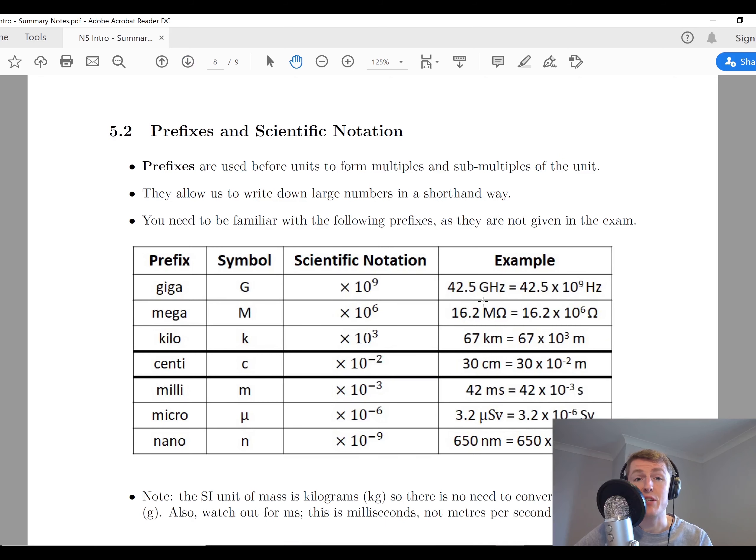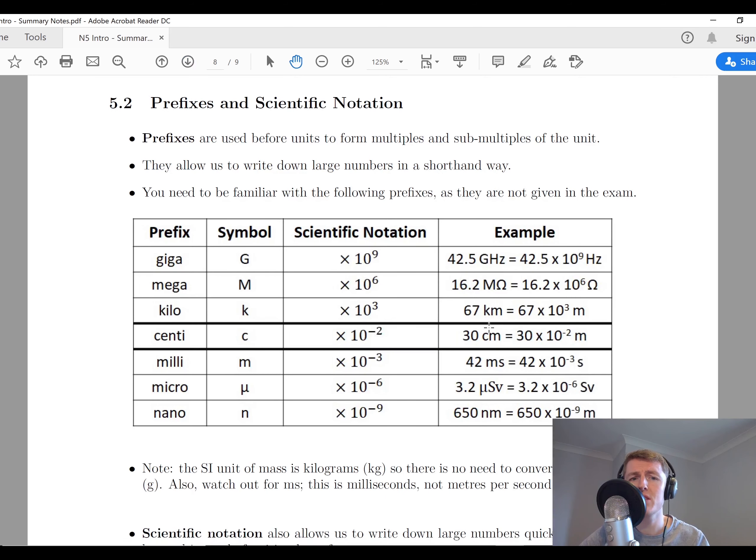The next thing to look at then is prefixes and scientific notation. Prefixes, as I said before, you will have used these before. Why these are used is because they form multiples and submultiples of a unit. They allow us to write down large numbers in a shorthand way. Instead of writing down really big numbers in a question, the examiners might give you loads of numbers but with prefixes in front of the unit. What you need to be able to do is convert from prefixes into numbers. You don't actually have to convert from numbers back into prefixes. All we need to do is recognize a prefix and substitute it with a certain number in scientific notation.